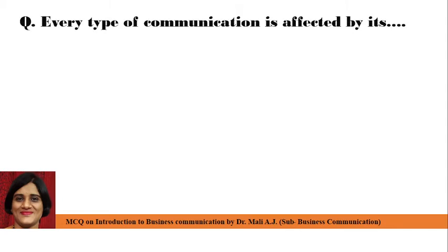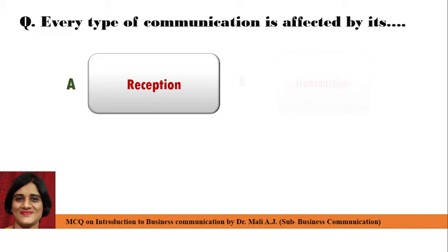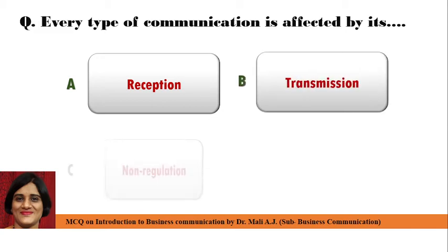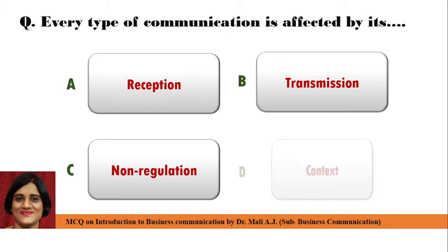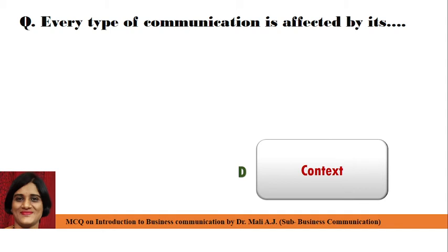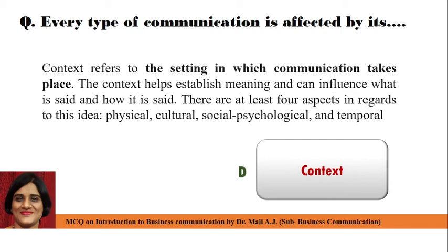Next question: Every type of communication is affected by its — Point A: Reception, Point B: Transmission, Point C: Non-Regulation, Point D: Context. Correct answer is Point D: Context. Every type of communication is affected by its context. Because context refers to the setting in which communication takes place. The context helps establish meaning and can influence what is said and how it is said. There are at least four aspects: physical, cultural, social, physiological, and temporal.